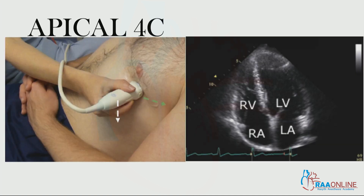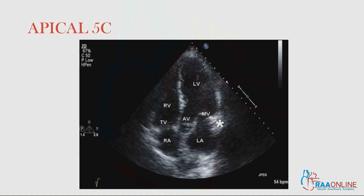Just by tilting the probe more superiorly and anteriorly from the four chamber view, you can get an apical five chamber view, which will open up the aorta. I will show you in the skill station — it is not that hard. Another structure visible in the apical five chamber view is the aortic valve and a small portion of the LV outflow, that is the aortic root.